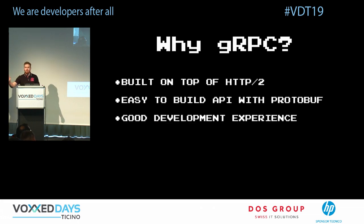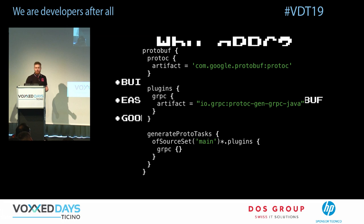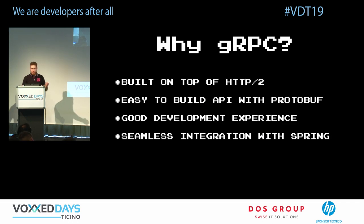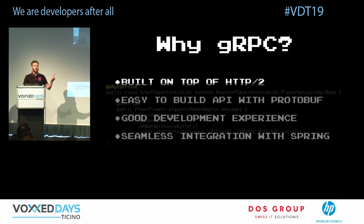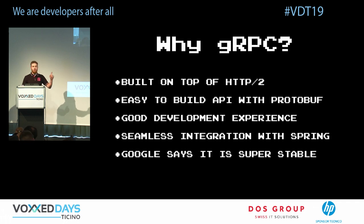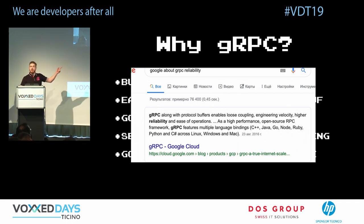You don't have to implement any of this yourself — just define things in the protobuf plugin, add a few entries, and it generates everything for you. Magic. All you have to do is implement your small business logic and add annotations. Additionally, Google states that gRPC is resilient — if you look at Google's thoughts on gRPC reliability, they say it has back pressure support.